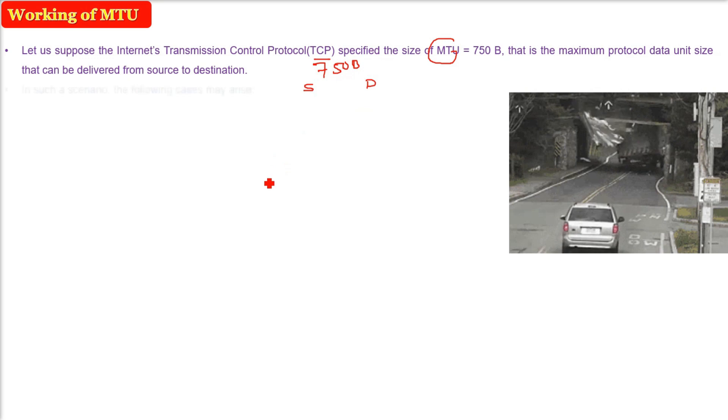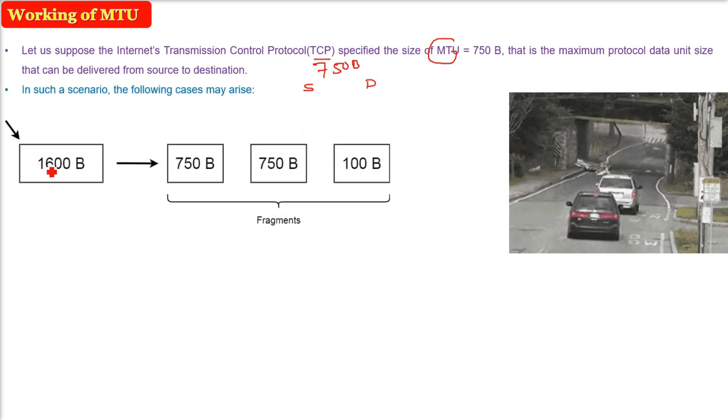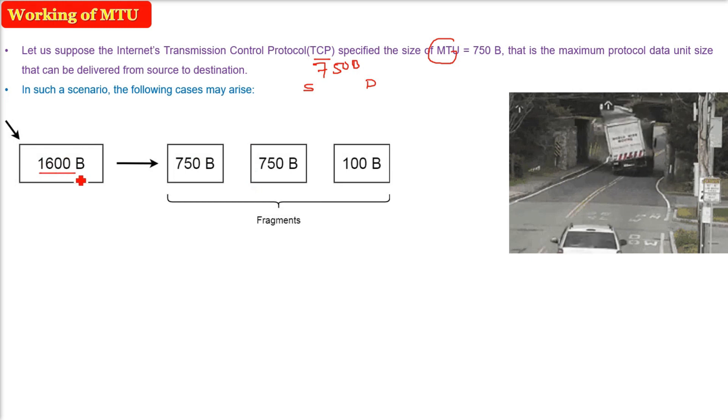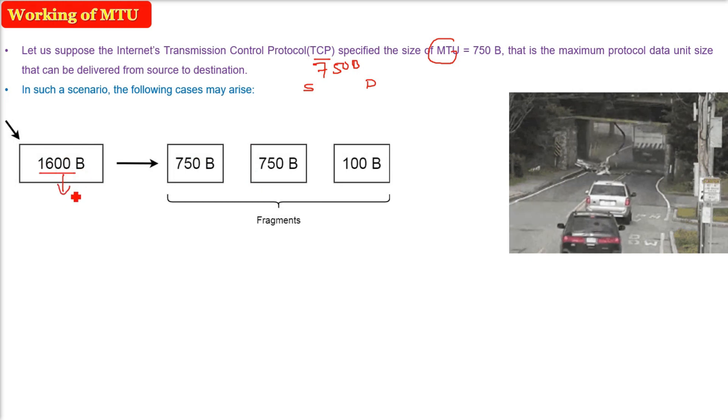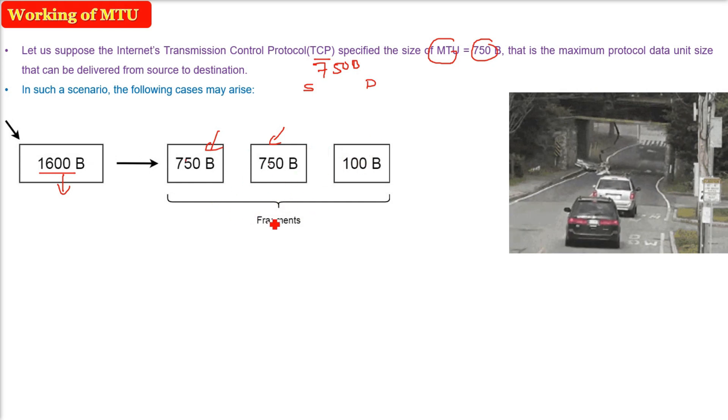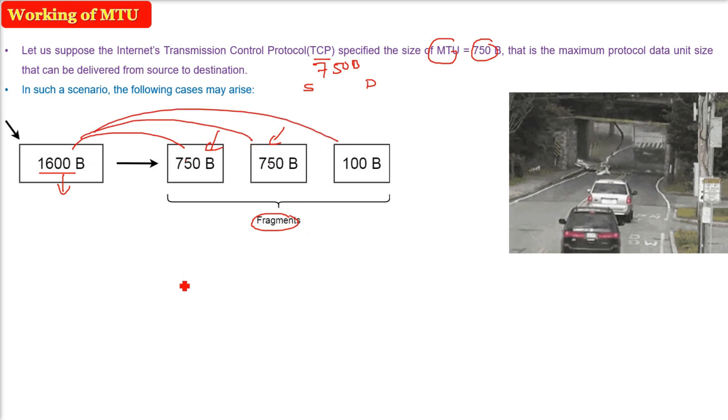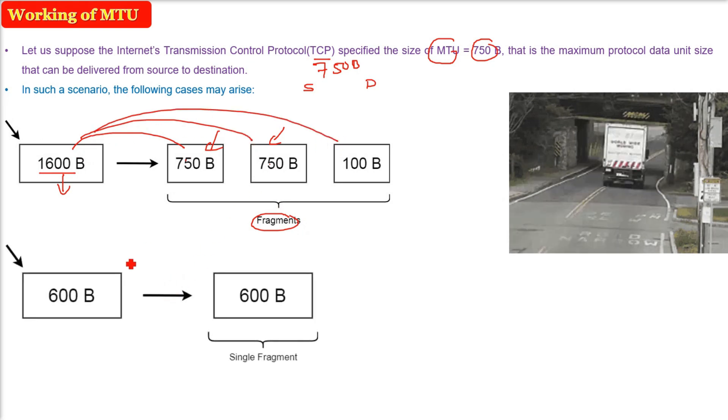There are two scenarios here. First scenario: you have 1600 bytes and you have to send it, but the MTU is 750. So the value has to be less than 750. The best way is to divide this 1600 so that it becomes three parts, three fragments: 750 bytes, 750 bytes, 100 bytes. They all are less than 750 bytes. So this is called fragmentation.